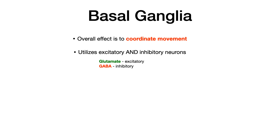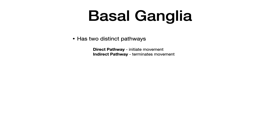In this video, glutamate neurons will be shown in green, meaning excitatory, and GABA interneurons will be shown in red, meaning inhibitory. The basal ganglia has two distinct pathways: the direct pathway and the indirect pathway. The direct pathway initiates movement and the indirect pathway terminates movement.